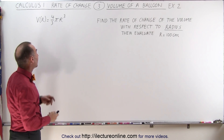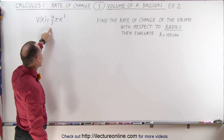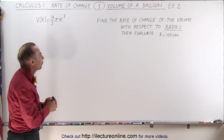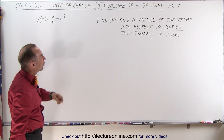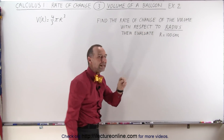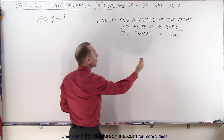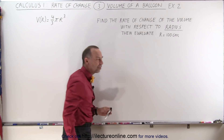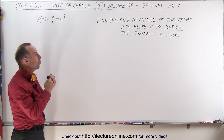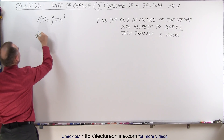We're talking about the volume of a balloon, and we know that the volume of a balloon relative to the radius is equal to 4/3 pi r cubed — the volume of a sphere. We're trying to find the rate of change of the volume with respect to radius, not depending on time. We're going to evaluate it when the radius is 100 centimeters. So what we're looking for here is dV/dr.